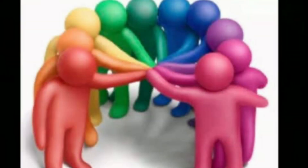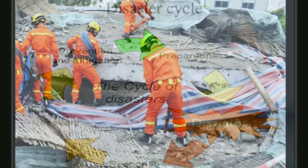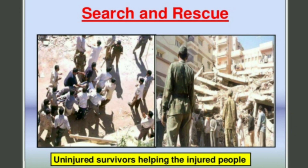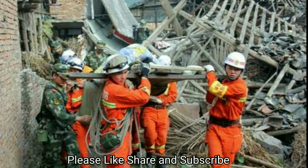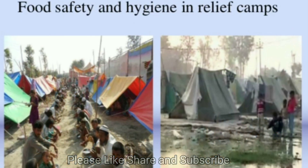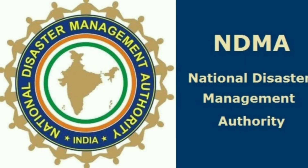Disaster management and community participation are closely related. Taking steps to prevent disasters, making plans to face disasters, and developing the capacity for that is called disaster management. To prevent or reduce damage caused by natural or man-made disasters, emergency planning and management is required. The National Disaster Management Authority was established in 2005. It undertakes planning and implementation of disaster management work.